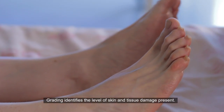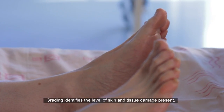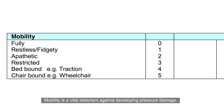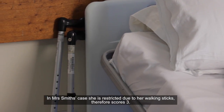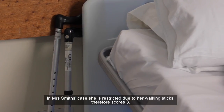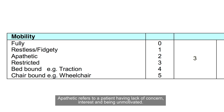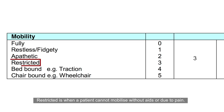Grading identifies the level of skin and tissue damage present. Mobility is a vital deterrent against developing pressure damage. In Mrs. Smith's case, she is restricted due to her walking sticks and therefore scores 3. 'Apathetic' refers to a patient having a lack of concern, interest, and being unmotivated. 'Restricted' is when a patient cannot mobilise without aids or due to pain.